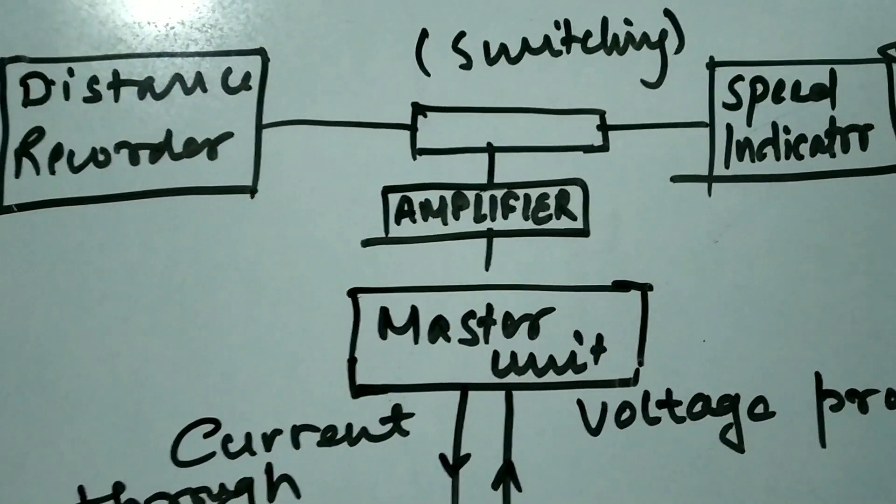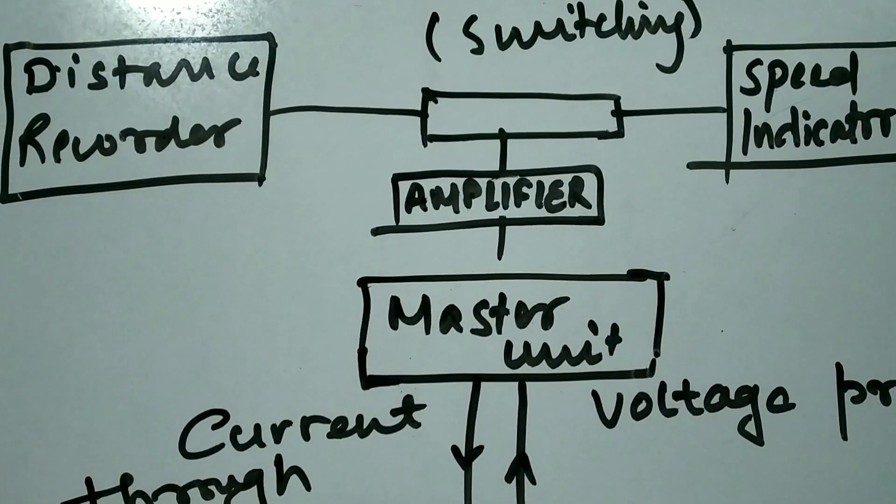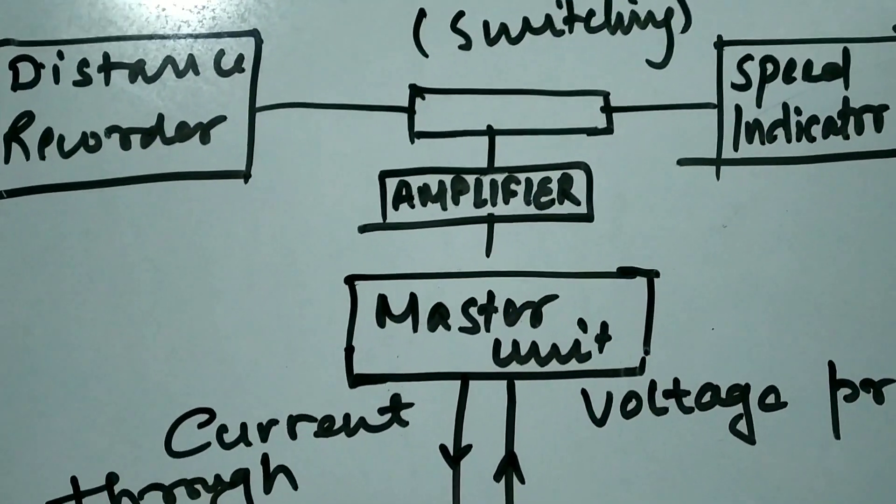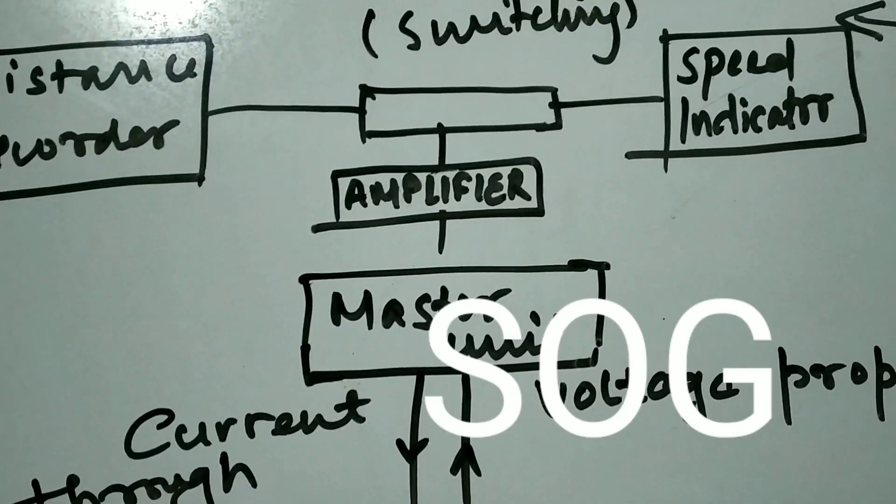The distance recorder counts the pulses which are equal to the number of miles traveled, and its accuracy is one to two percent of the distance traveled. One important point is that the electromagnetic log only gives the speed through water, not speed over ground.